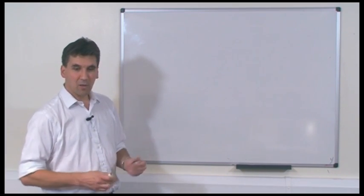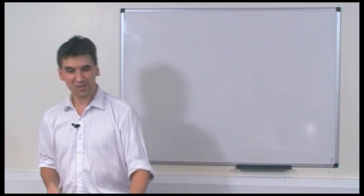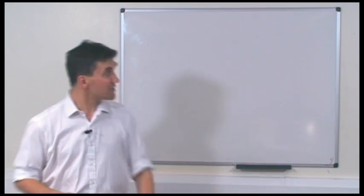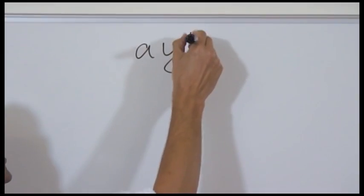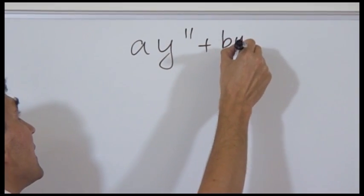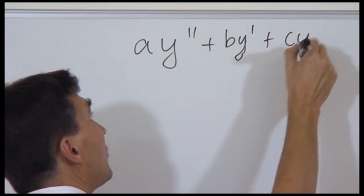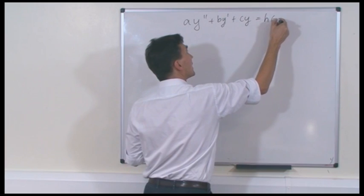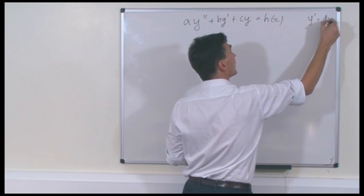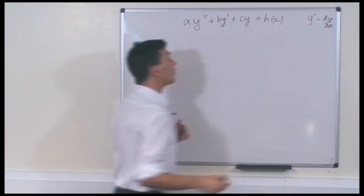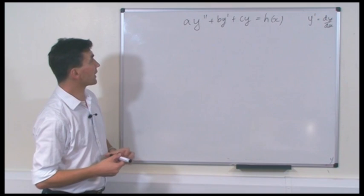This is intended to follow on from a podcast on second-order linear homogeneous differential equations. Let's take as an example the differential equation: A times Y double prime plus B times Y prime plus C times Y equals some function H of X. Y prime is shorthand for dY/dx, and Y double prime is shorthand for the second derivative of Y with respect to X.